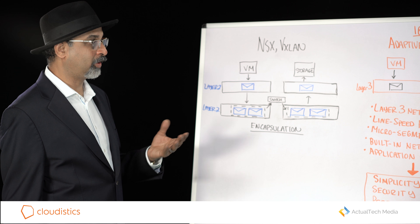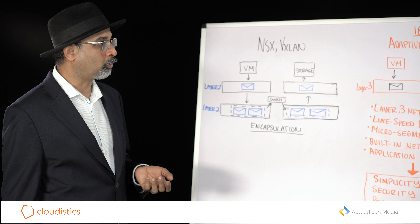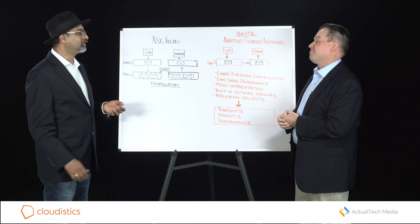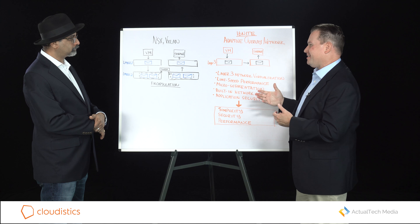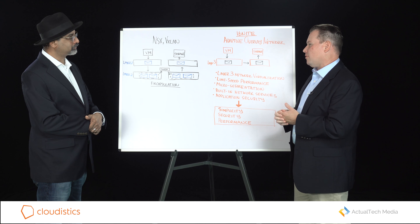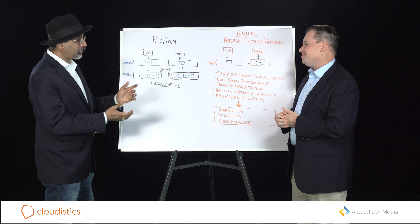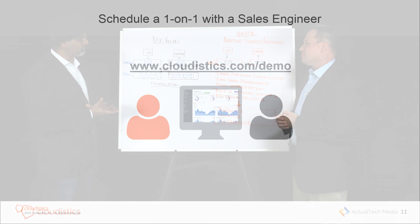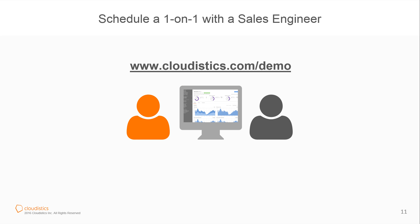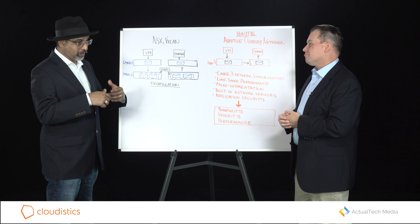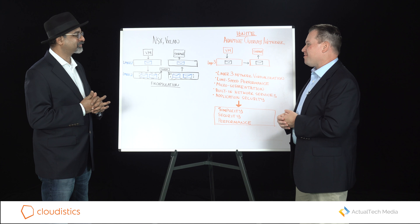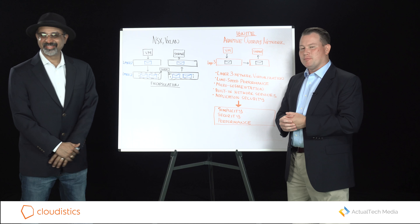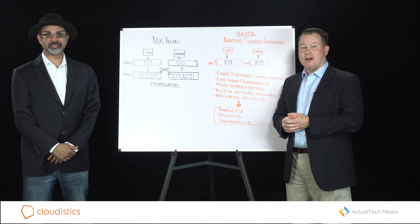We have line rate performance whether you're virtual or physical, and it operates exactly the same. Our current SDN routers that we deploy do network virtualization at one and a half terabits per second. For people who want to learn more and see what Cloudistics network virtualization can do, I would recommend taking a look at our website, cloudistics.com/demo. You can get a demo scheduled or even get access to our hardware in a virtual lab, where you can deploy your own networks and see how it operates.